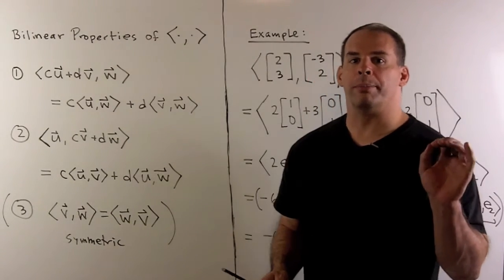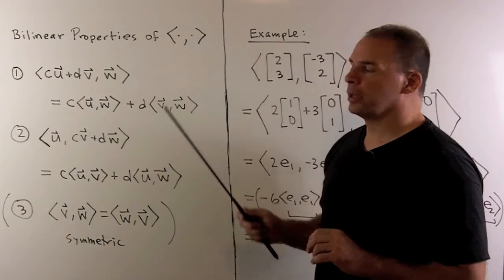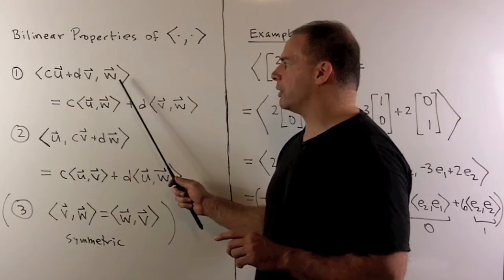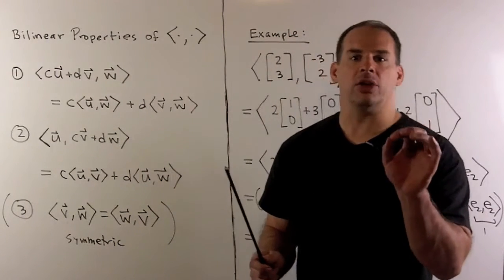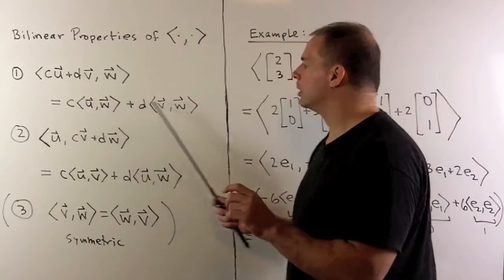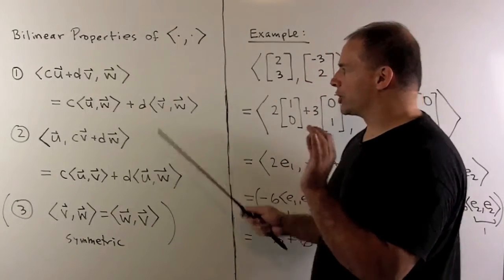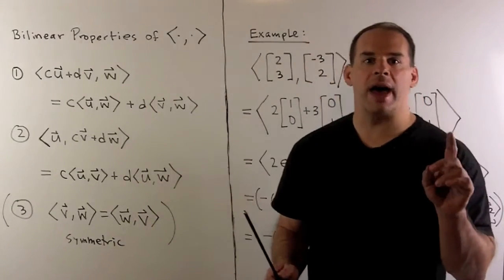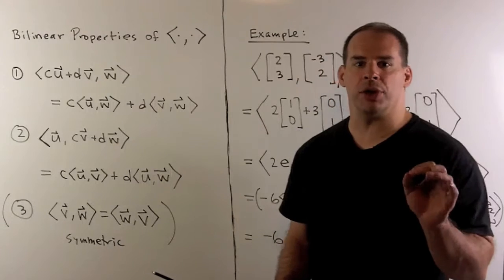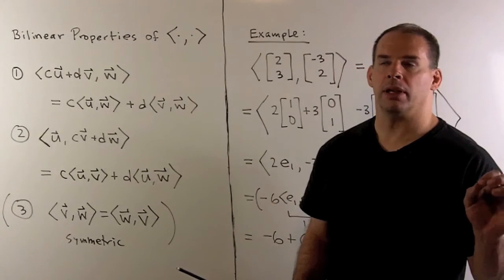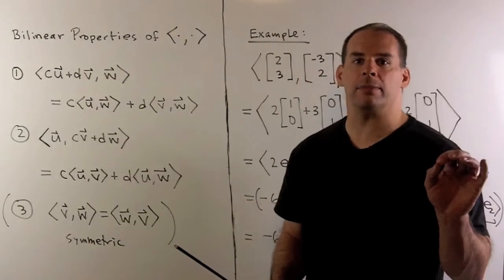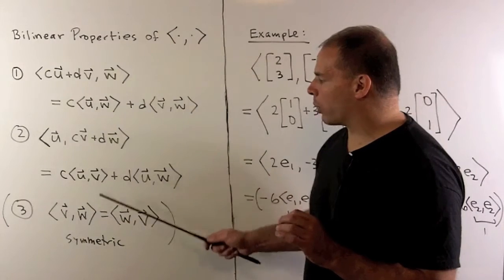To finish, we note the bilinear properties of the inner product. These say that if we take the inner product of a linear combination with a vector, it's legal to break up the linear combination and take the inner product with each piece — and we can do that in either slot. We also have the symmetric property: the inner product of v and w equals the inner product of w and v. Each of these is straightforward, so I'll leave them to you to verify. We really only use these when working abstractly.